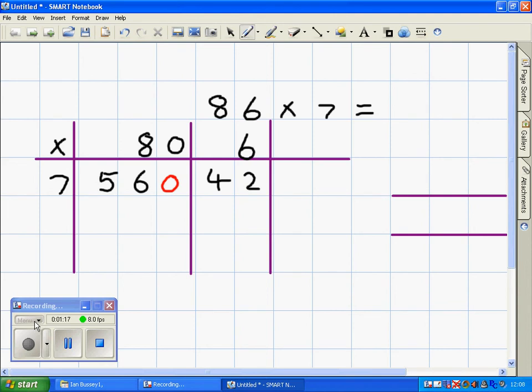What you do is, you put 560, and 42 underneath the right of the 60.